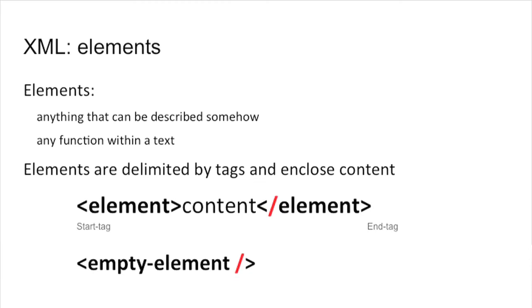XML is made of two main components. The first component is called elements. So what are elements? Elements are everything you can put a label on, everything you will describe somehow, everything that you think is important to annotate in your text. The way it looks is what you see on the screen. There is a start tag, which is composed of an angle bracket, the name of your tag, and another angle bracket to close it; then the content of your element; and your end tag, which is identical to the start tag but with a slash just before the tag name. Sometimes elements can be empty — that is, they don't have any content. In that case, you will have only one tag with a slash immediately after the element name, condensing the start and end tag into one.